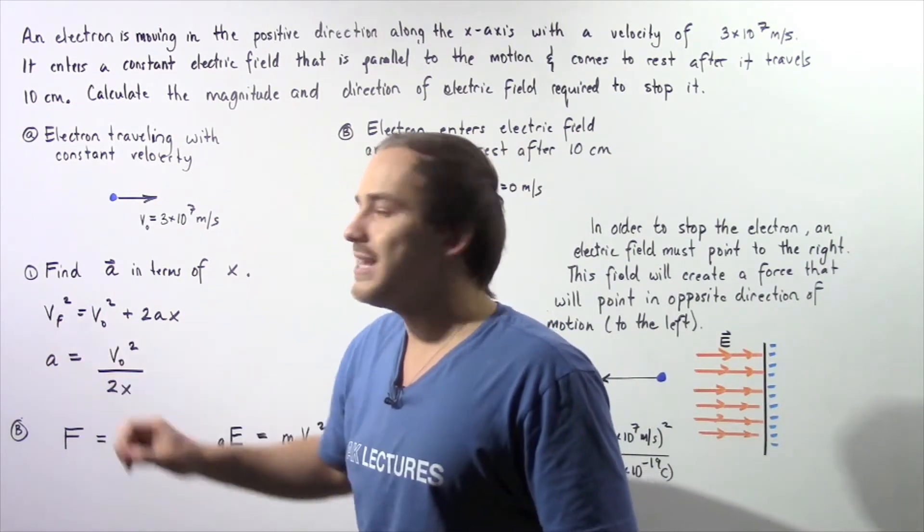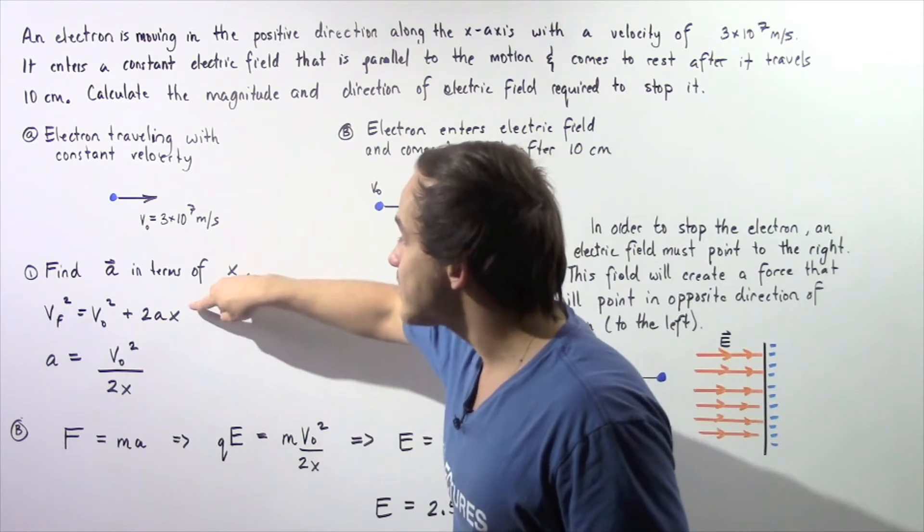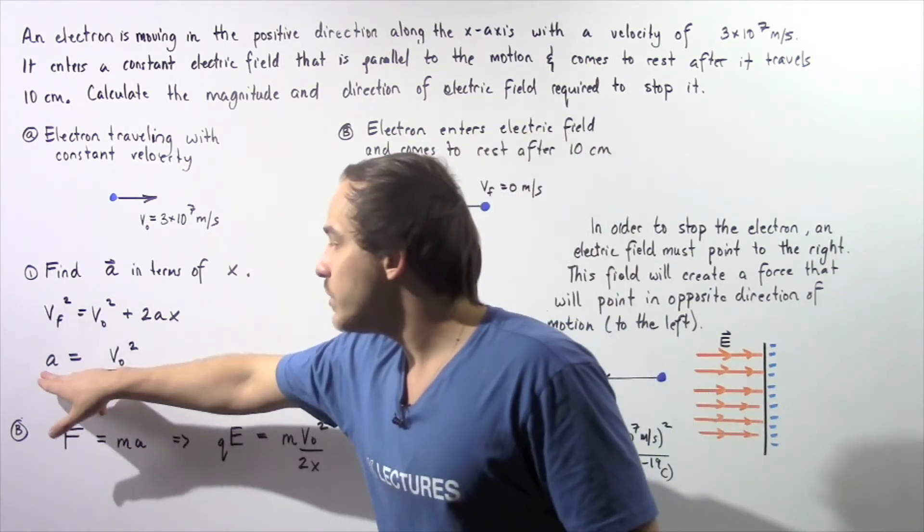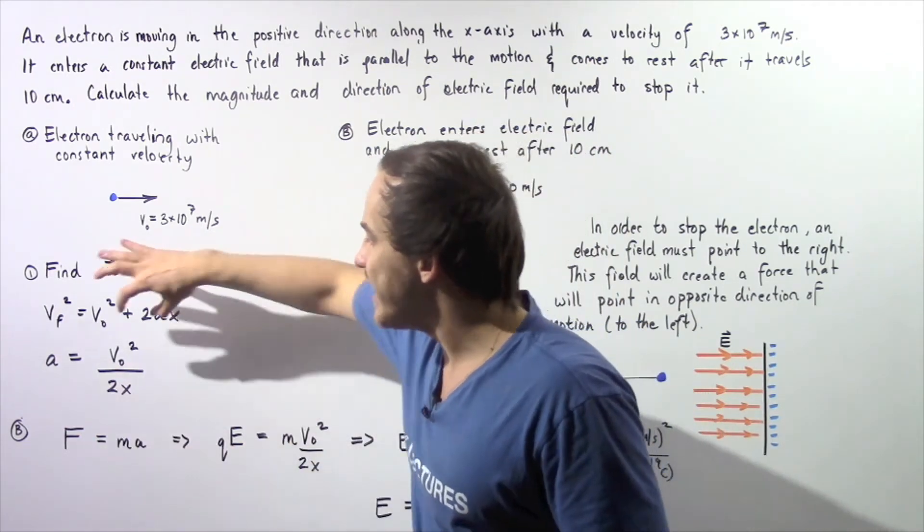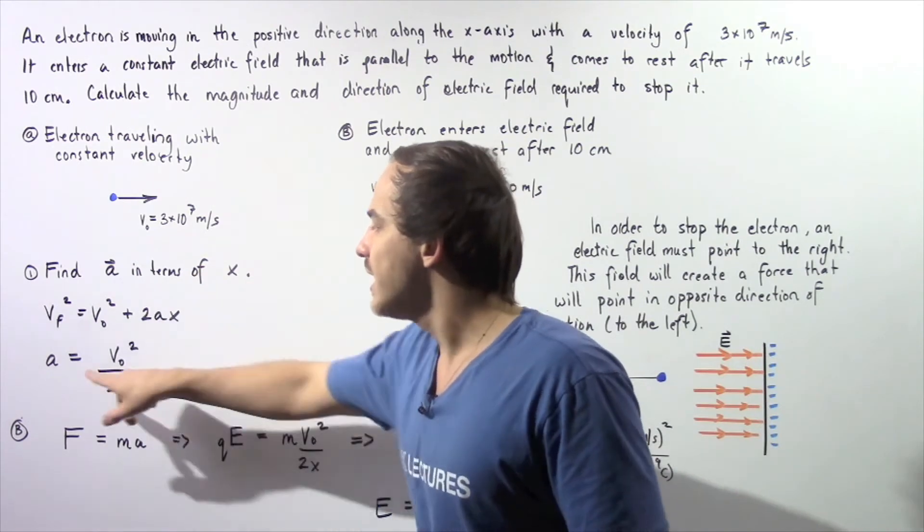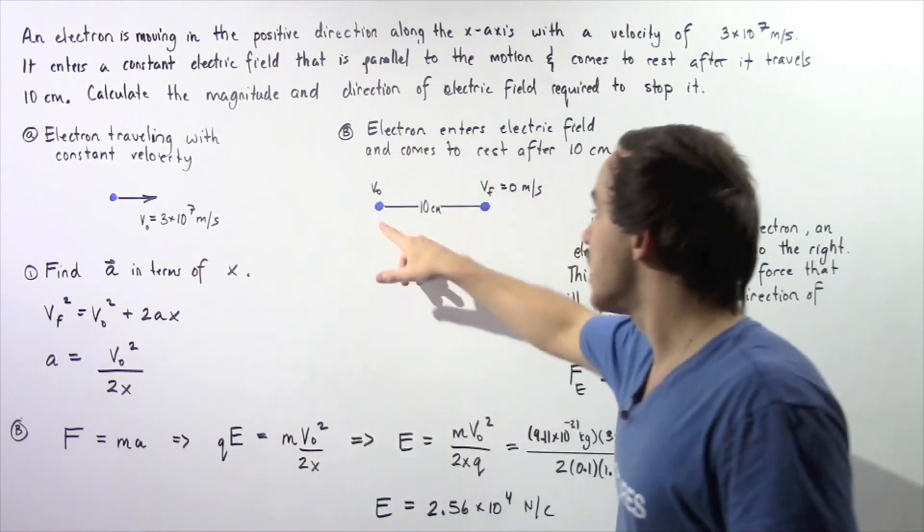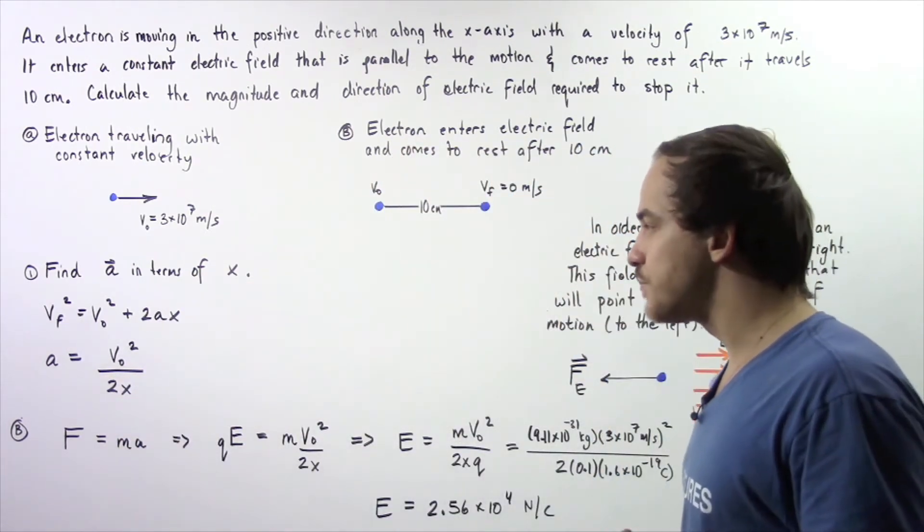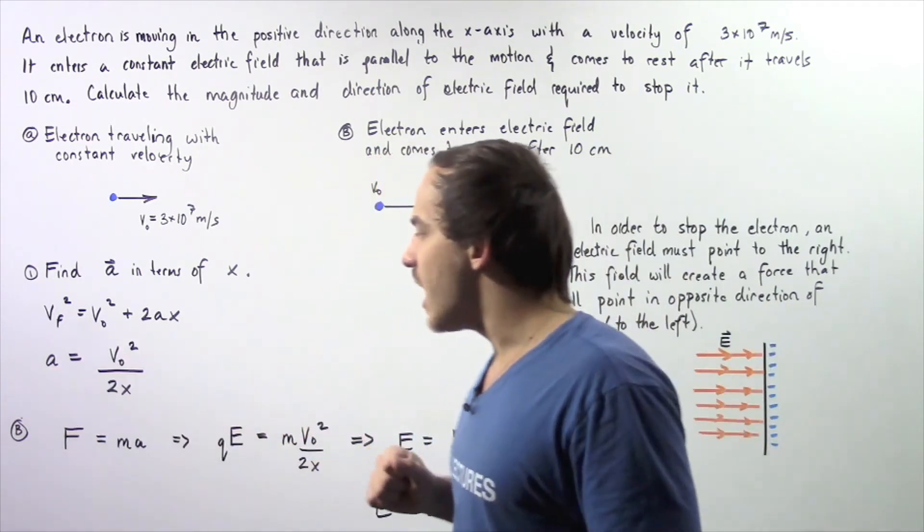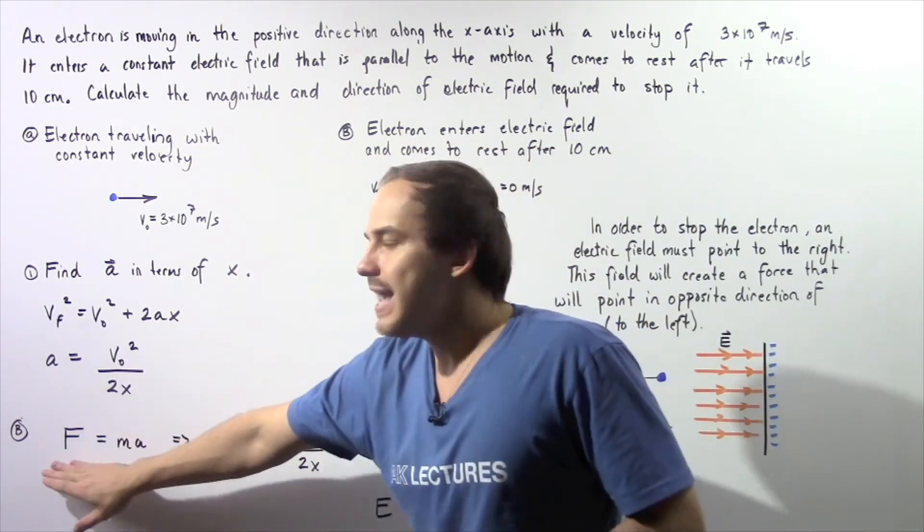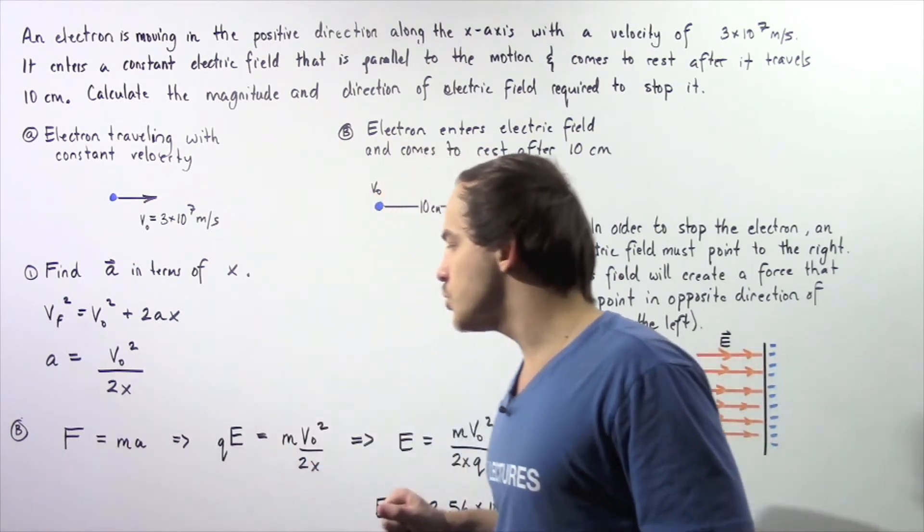Our final velocity is 0, so we can solve for a: a equals initial velocity squared divided by 2x. Now we use this result and plug it into the second law of motion.